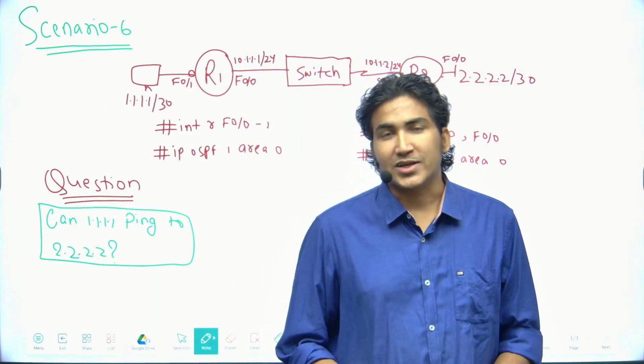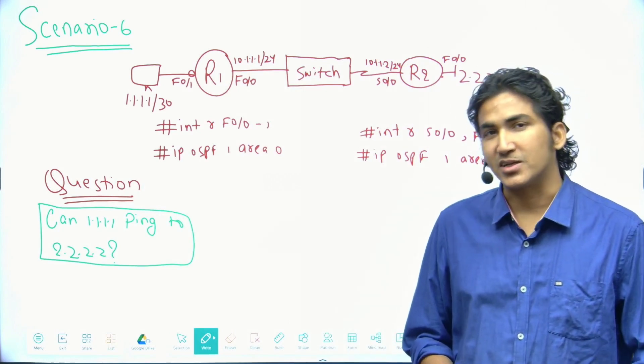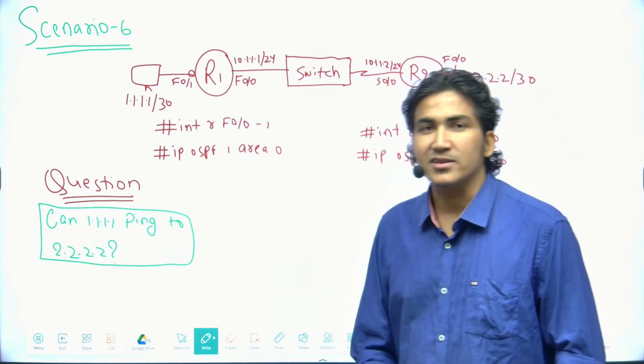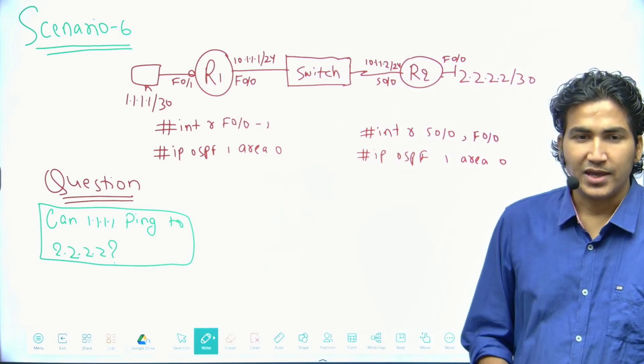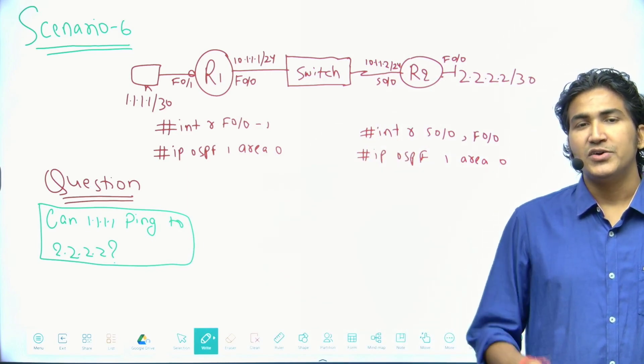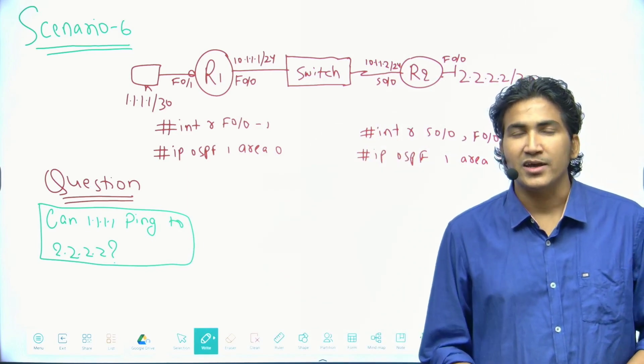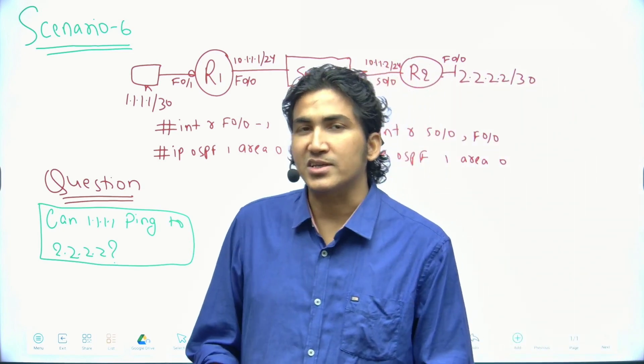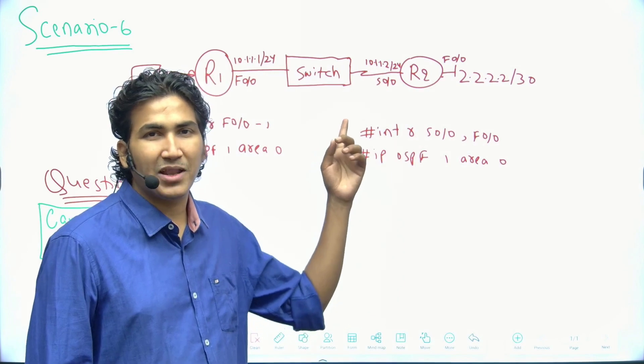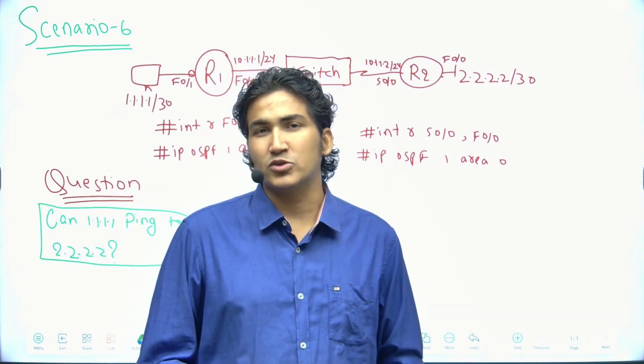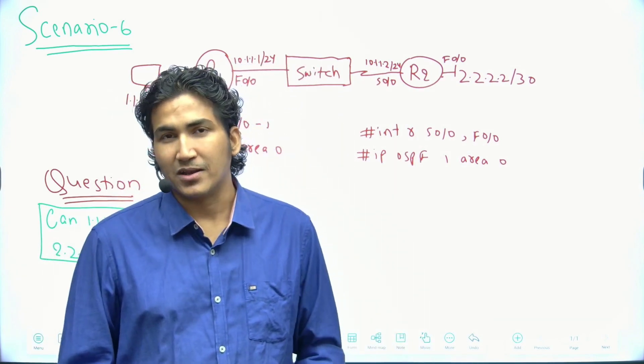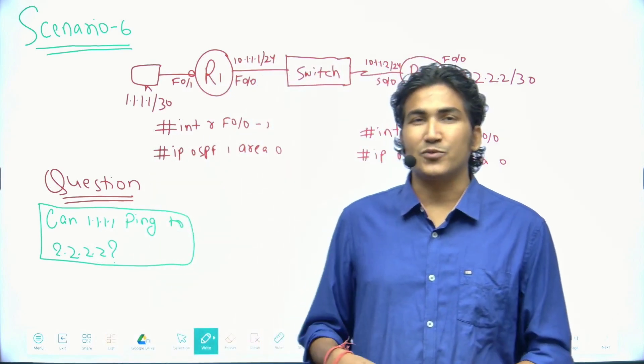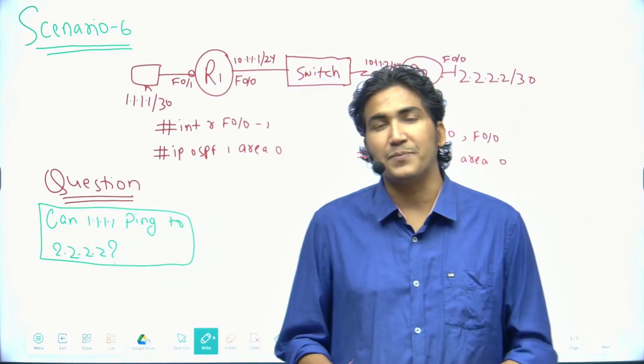Hey guys, welcome to scenario number six. The question for today is this, and this is my scenario. Both routers are connected through one switch. R1 is connected with the switch through Ethernet cable, and R2 is connected with the switch through serial cable. After that, both routers are connected with one host. R1 is connected with one PC with IP 1.1.1.1.